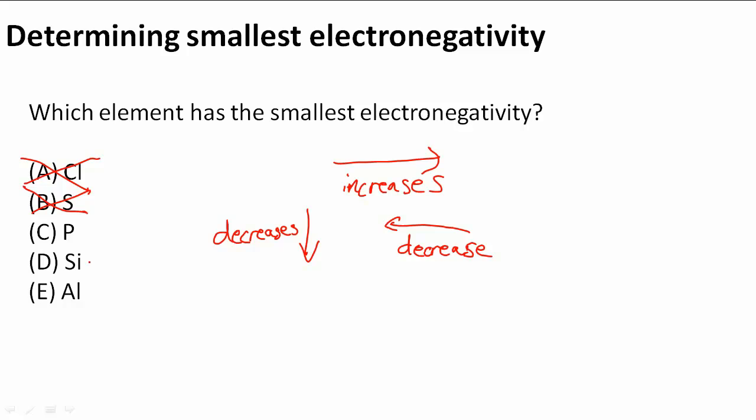Then we have Si. Si is also to the left of P, so that must mean P is out. Al is to the left of Si, so E is the answer.